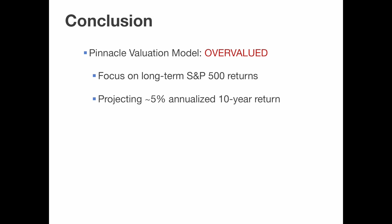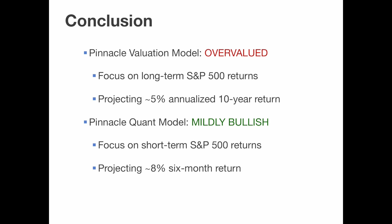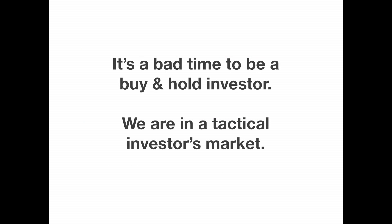The fact that the quant model is currently bullish probably means we're in front of one of those upswings marked by the green arrow. In conclusion, the two models are disagreeing right now. The valuation model is effective in the long term and tells us to expect below-average returns, while the quant model is more effective in the short term and expects above-average returns shortly. According to the models, it's probably not a good time to be a buy-and-hold investor — buying the S&P 500 today and holding for ten years would likely lock in a return of around 5%, below average. However, a tactical investor like Pinnacle may be better positioned to take advantage of market upswings while defending against the significant downside risk that comes when the market is overvalued.